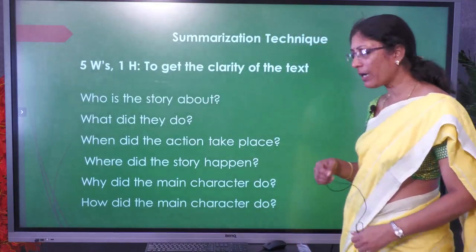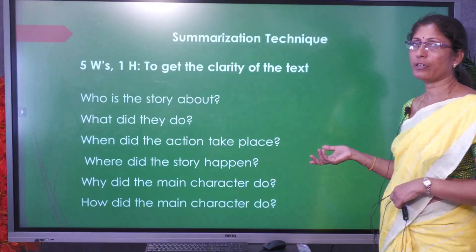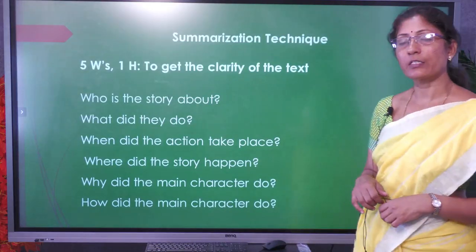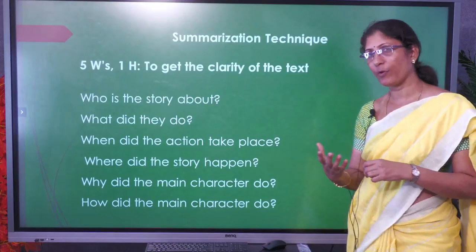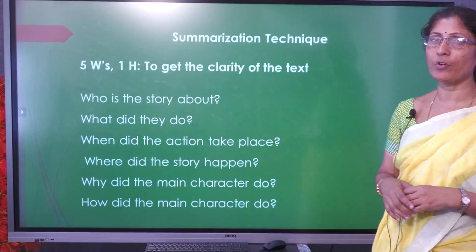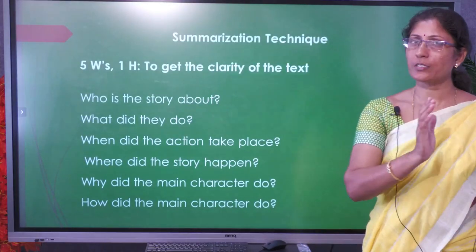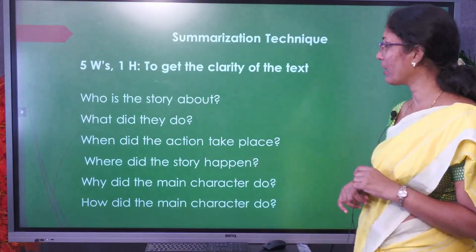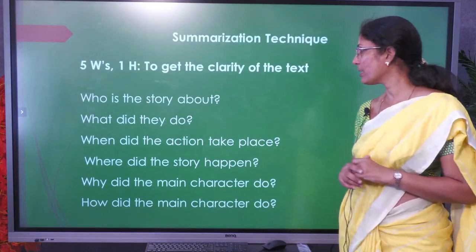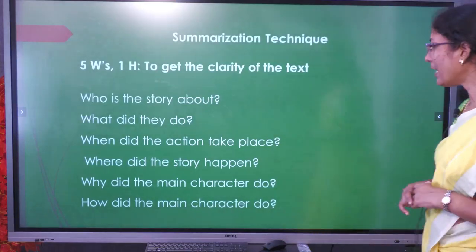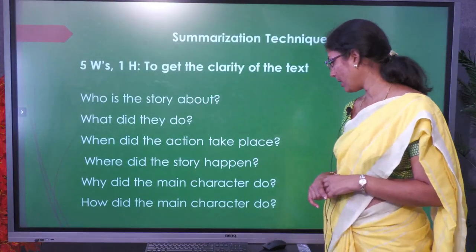There are different techniques for summarization. The basic technique is to ask six WH questions when reading a text — five W questions and one H question. If you ask these questions, you will get the core important information. The questions are: Who is the story about? What did they do? When did the action take place? Where did the story happen? Why did the main character act? How did the main character do it?